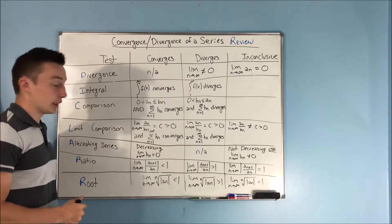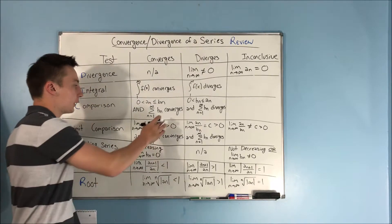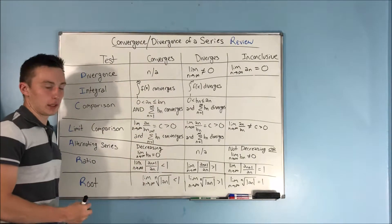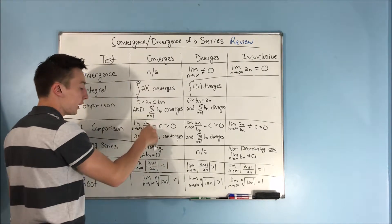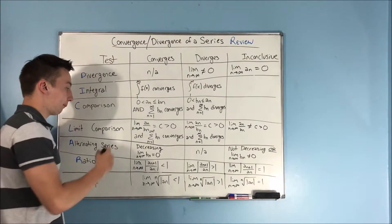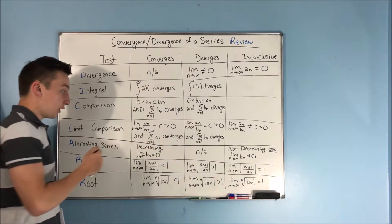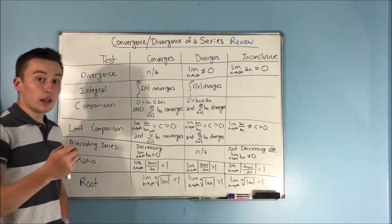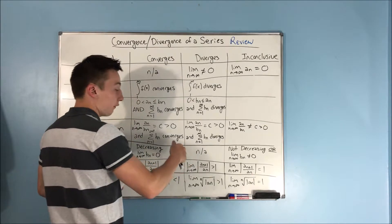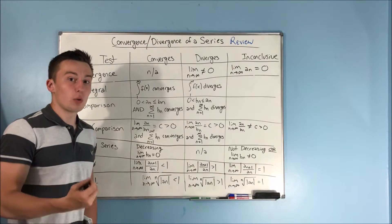Next is the limit comparison test. You take the limit as n approaches infinity of a sub n over b sub n — b sub n being the series that you are comparing to. If that limit equals a constant number that is greater than zero, and you know that the series with b sub n converges, then you know that the series with a sub n converges as well. Similarly, if you have the same conditions but the sum from n equals 1 to infinity of b sub n diverges, then the sum from n equals 1 to infinity of a sub n will also diverge.